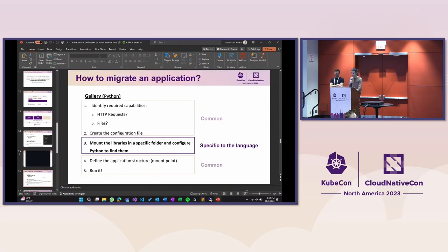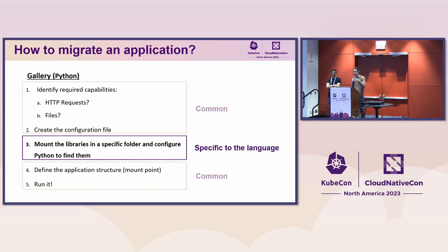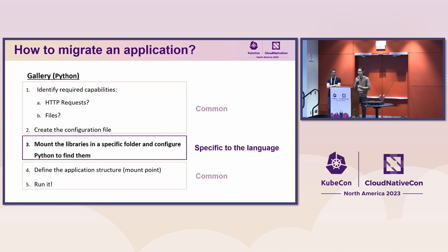That was for the JavaScript application. For the Python application, the process is really similar. Identifying the capabilities and preparing the configuration file, as well as defining the project architecture and running it, are common for any language. The only thing specific to each language is in the middle — for JavaScript we bundled all files into a single one; for Python we need to mount the libraries we want to run, like the Flask libraries, and configure Python to read them. Due to time, we'll skip the Python demo and continue talking about benefits and challenges.